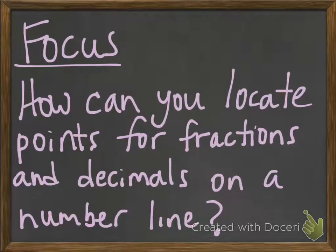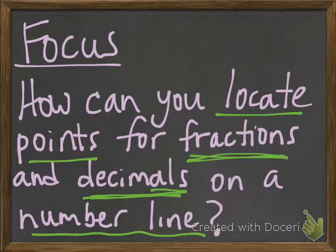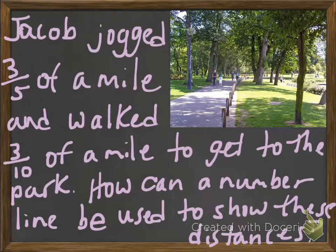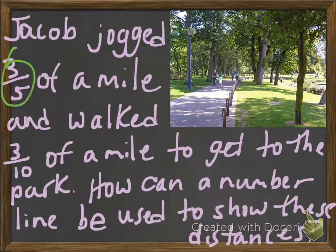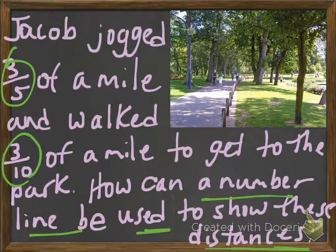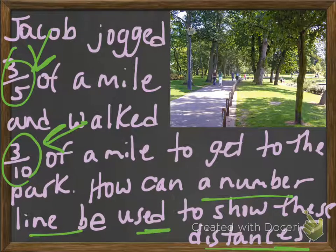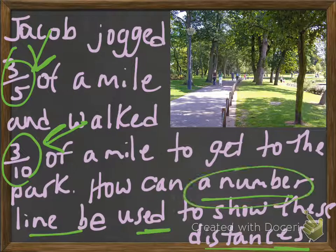Our focus is: how can you locate points for fractions and decimals on a number line? Let's take a look. Jacob jogged 3/5 of a mile and walked 3/10 of a mile to get to the park. How can a number line be used to show these distances? One is 3/5 of a mile and the other is 3/10 of a mile. How could you show it on a number line?